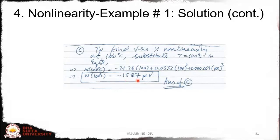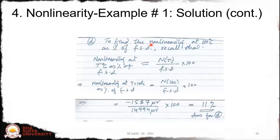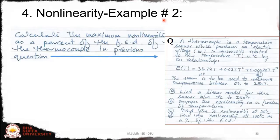For Part C, to find the percentage nonlinearity at 100°C, substitute T = 100 into the nonlinearity equation n(T). The result is n(100) = −1587 µV. The negative sign indicates the actual output is below the ideal straight line. Dividing by the full-scale deflection of 14,994 µV, the nonlinearity at 100°C as a percentage of full-scale deflection is approximately 11%.